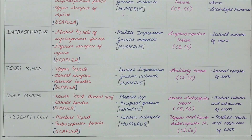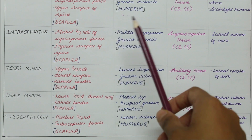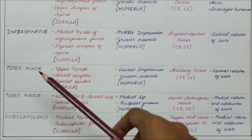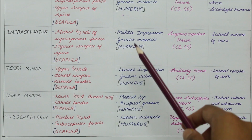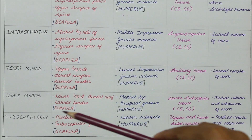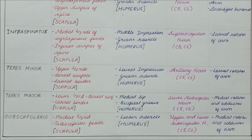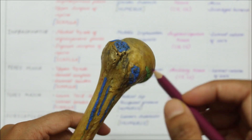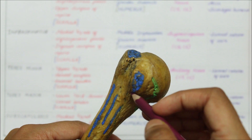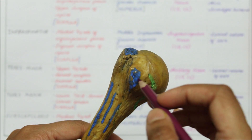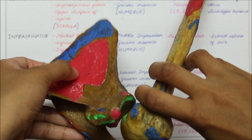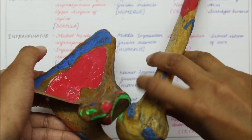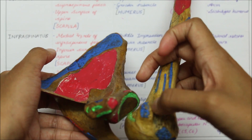Now let's look at the insertion of the subscapularis. The subscapularis is inserted into the lesser tubercle of the humerus. As we have seen, the supraspinatus, infraspinatus and teres minor are inserted into the upper, middle and lowest impressions of the greater tubercle, whereas the subscapularis is inserted into the lesser tubercle of the humerus. This is the greater tubercle, this is the lesser tubercle, and the subscapularis is inserted into the lesser tubercle of the humerus right here. As a whole, the subscapularis originates from the subscapular fossa on the anterior aspect and inserts into the lesser tubercle right here.